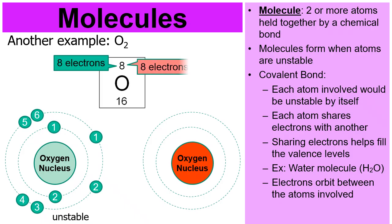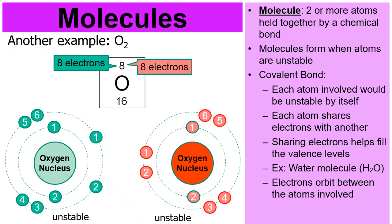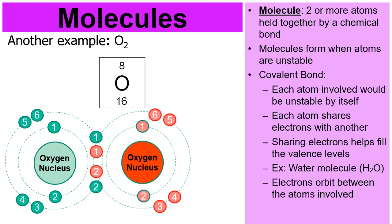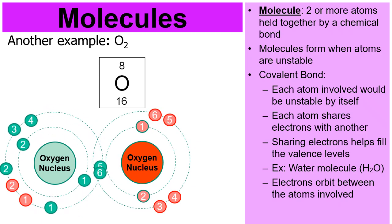Same with the red one — eight electrons total, two in level one, level one stable. But then there are only six electrons in level two. Each oxygen atom by itself is unstable, but they're going to share electrons in a moment to become stable, by overlapping their electron levels. They then become stable.